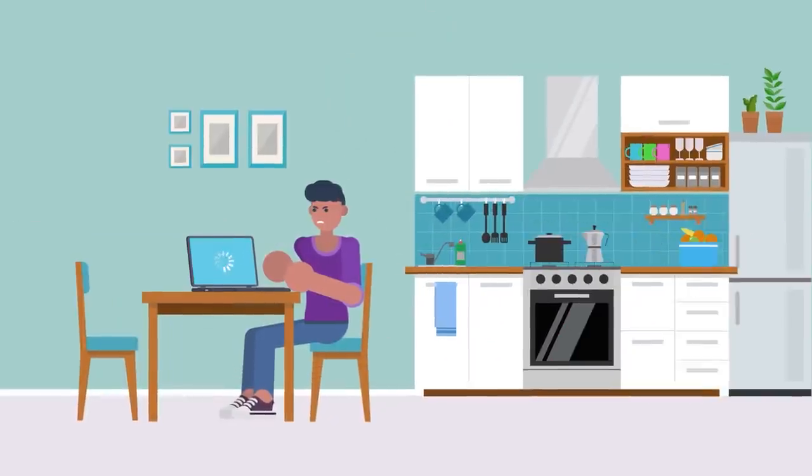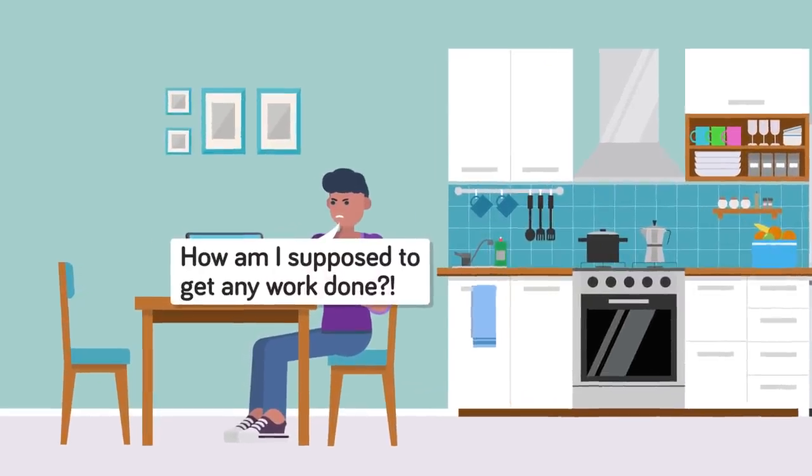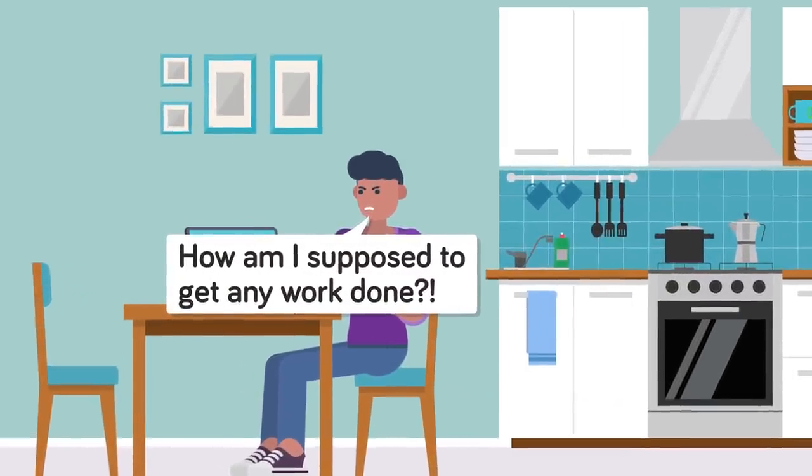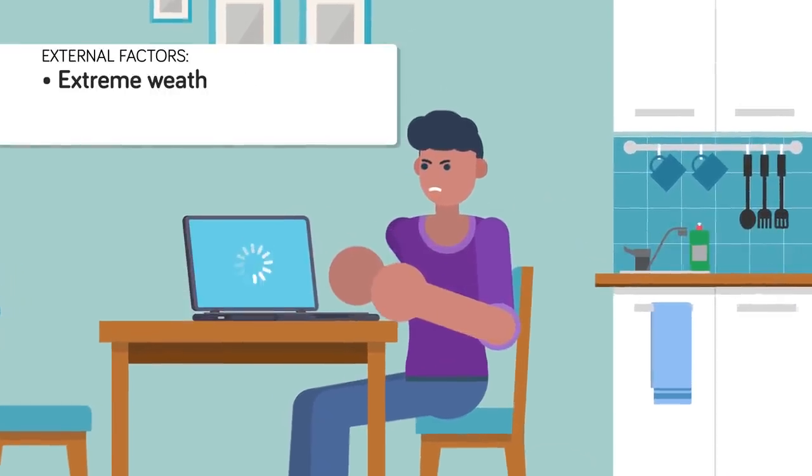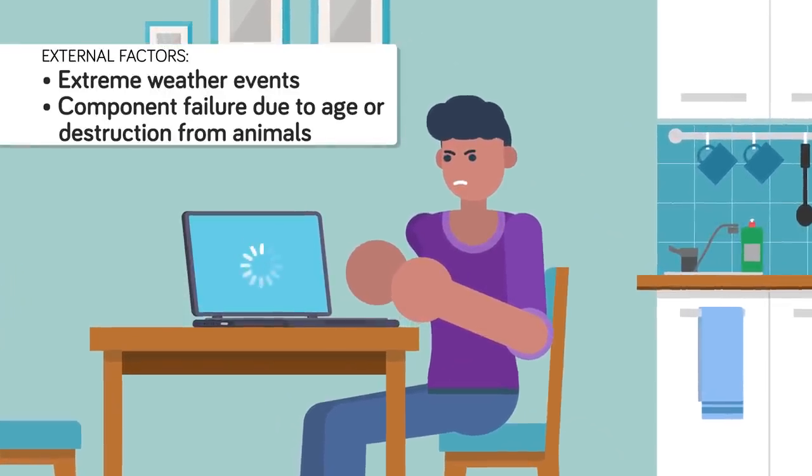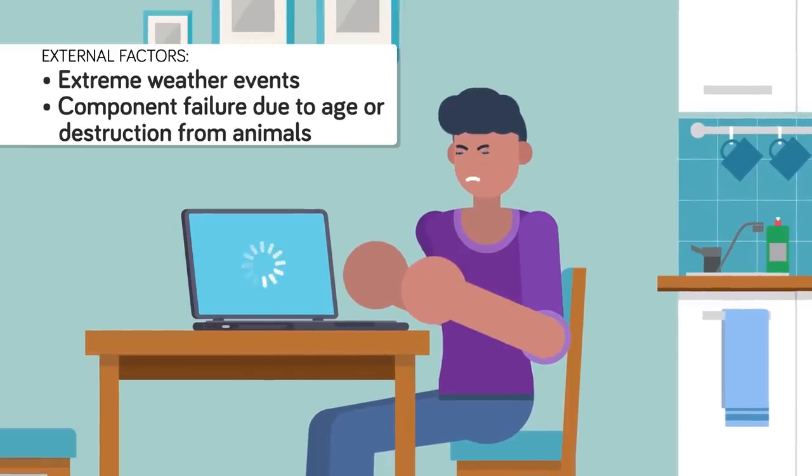If your internet goes out completely, it might not even be because of a mass surge in volume. There are a number of external factors that can lead to an outage. Common issues include extreme weather events or component failures due to age or destruction from animals who like to chew on the wires or build nests.